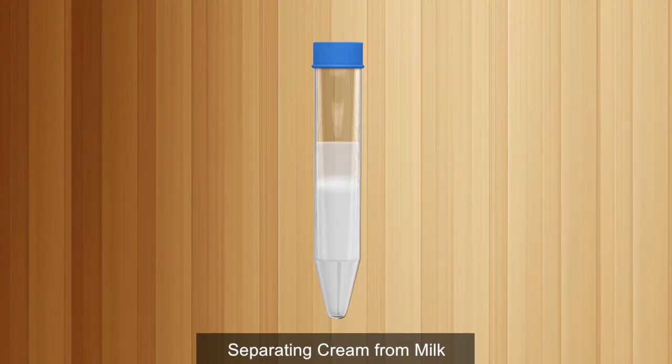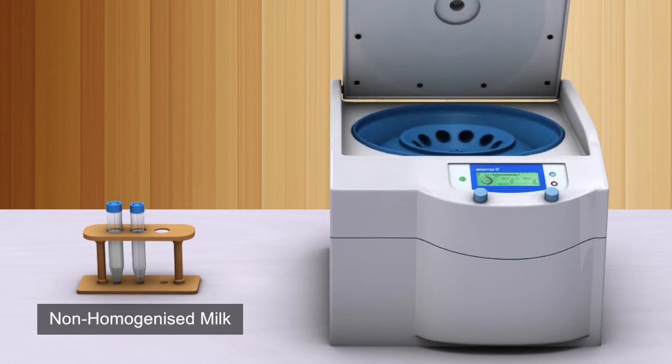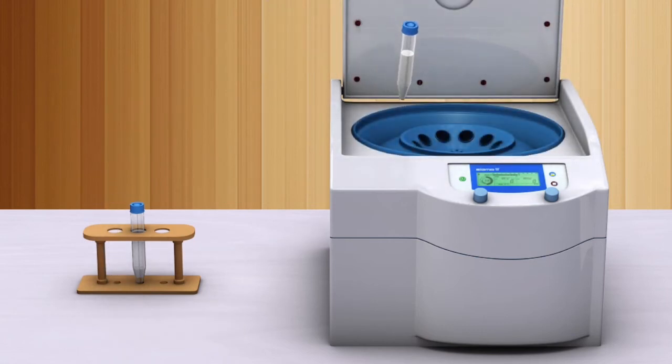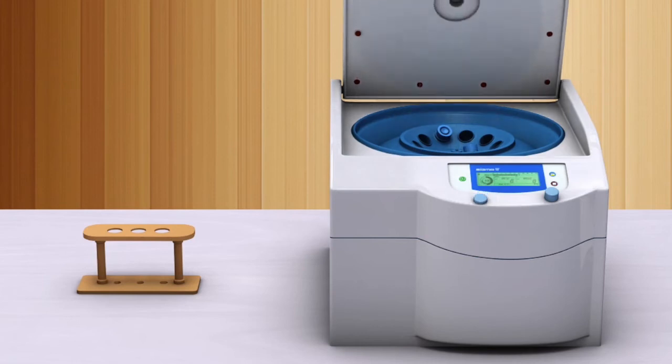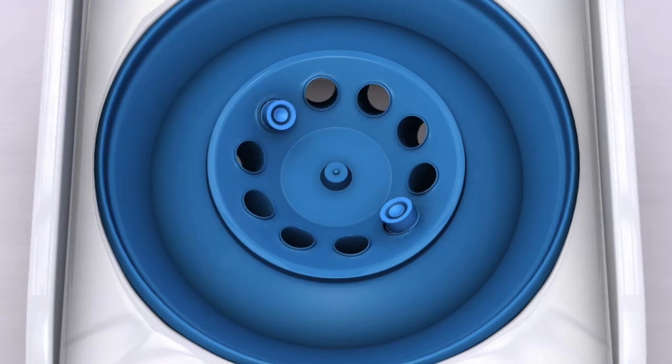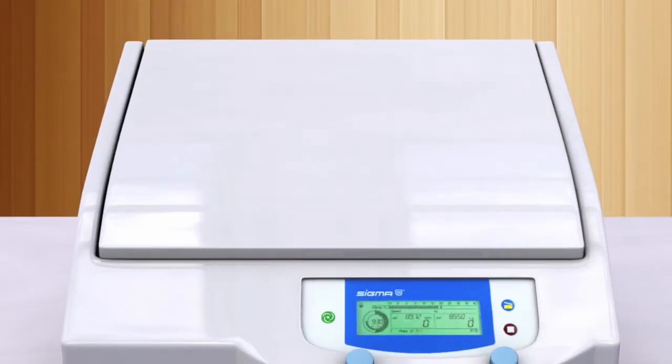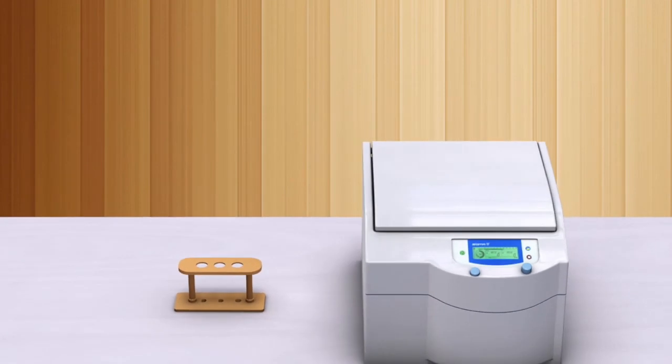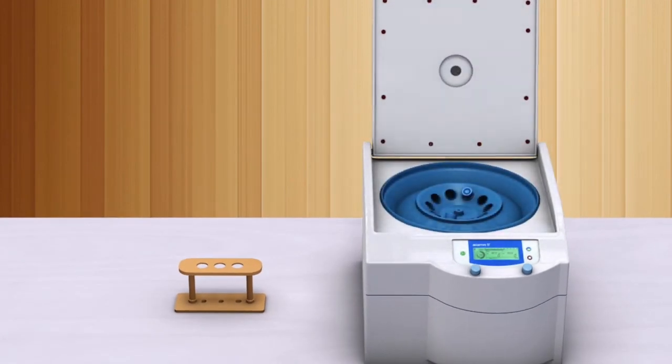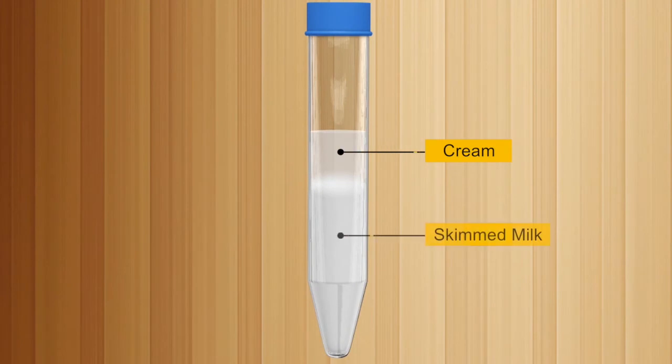Separating cream from milk. Non-homogenized milk is poured into test tubes. Then, these test tubes are placed in the centrifuge. Next, centrifuge is allowed to run for some time. After centrifugation, milk gets separated into cream and skimmed milk.